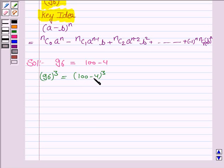We expand this using the expansion of (a - b) to the power n. Here, n is 3, a is 100, and b is 4. So 96 to the power 3 equals (100 - 4) to the power 3.